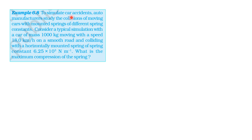To simulate car accidents, auto manufacturers study the collision of a moving car with mounted springs of different spring constants. Consider a typical simulation with a car of mass 1000 kg moving with a speed of 18 km per hour on a smooth road, colliding with a horizontally mounted spring of spring constant 6.25 into 10 power 3 newton per meter. What is the maximum compression of the spring?